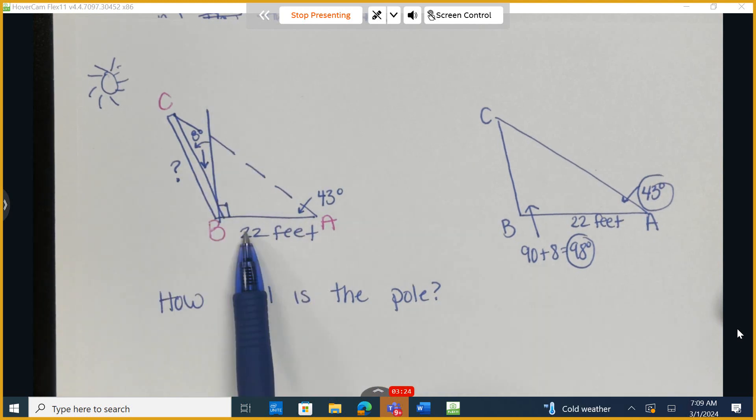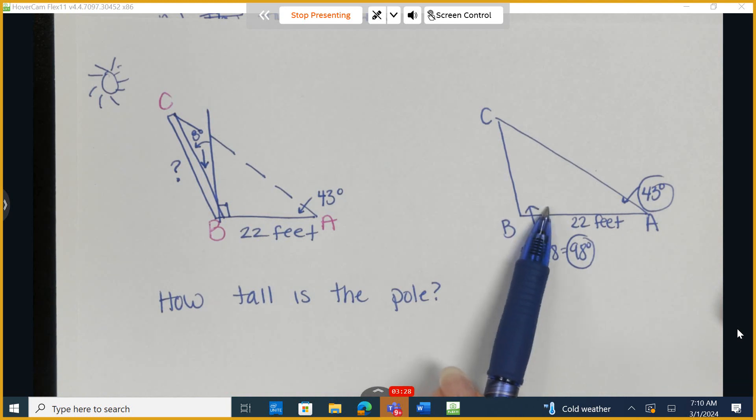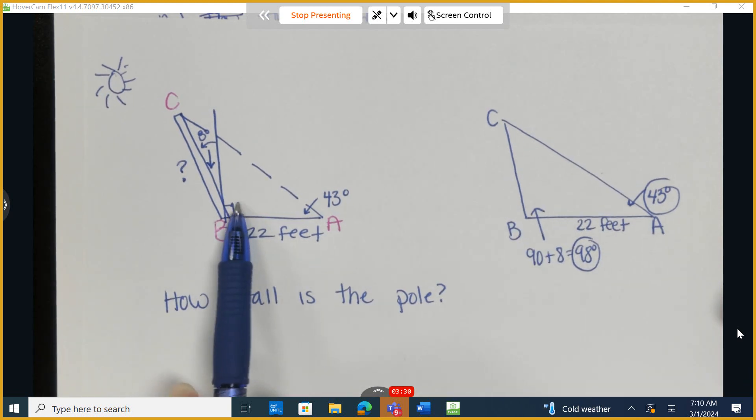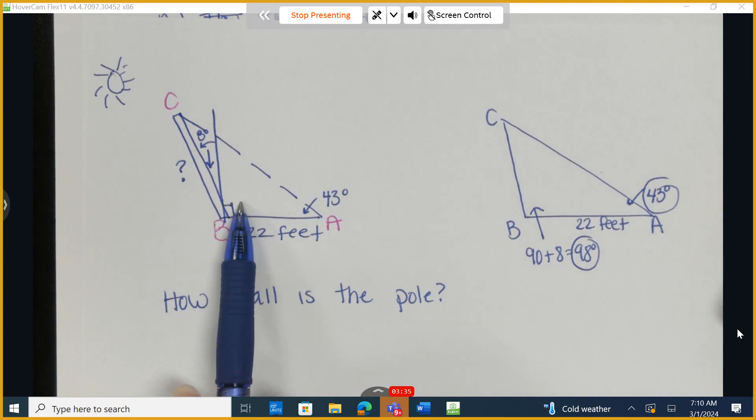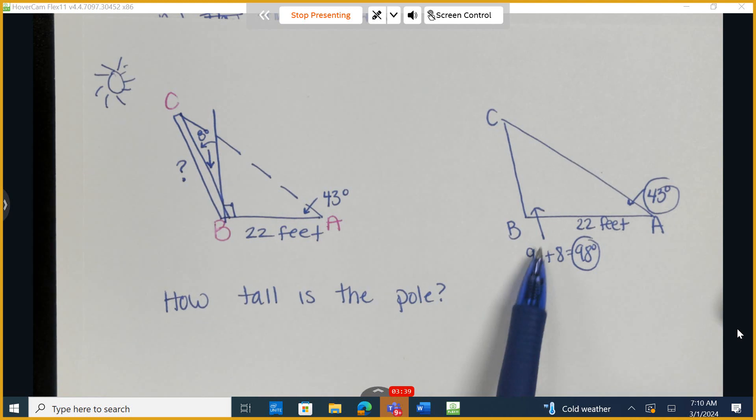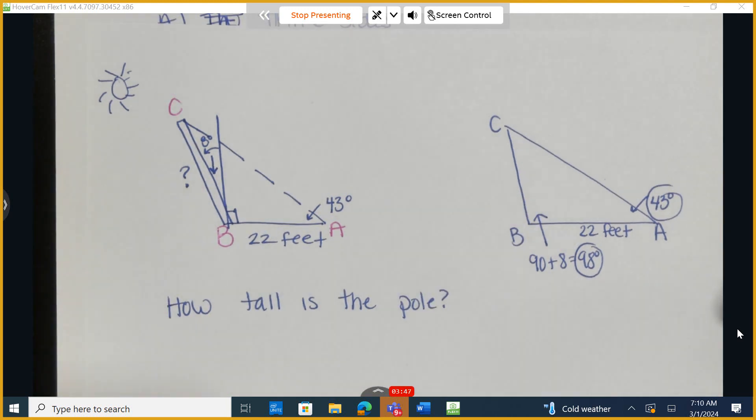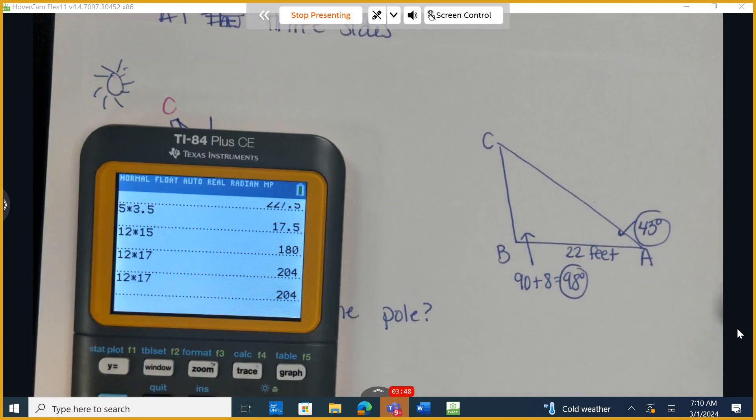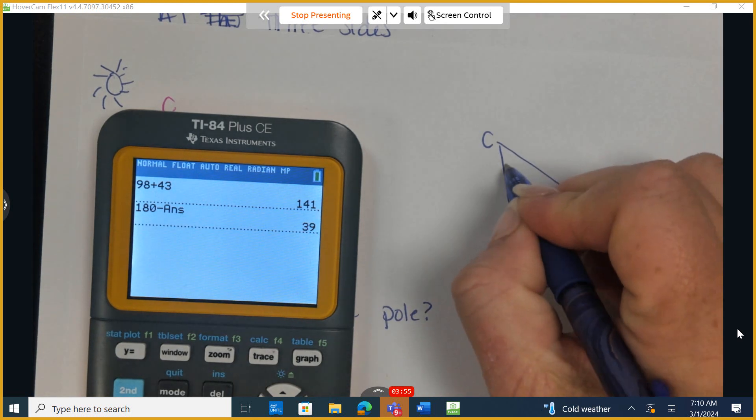This is 43 degrees. I know this is 98 because we have the 90 degree angle from the vertical to the ground. It creates a 90 degree angle. And then I need to add this 8 degree where it tilts towards the sun. 90 plus 8 is 98. Let's grab our calculators, and we can figure out what angle C is or this missing angle. So I have 98 plus 43, and I'm going to subtract 180 from this amount to end up with 39.